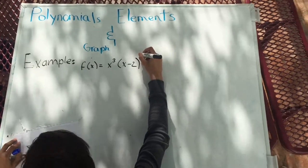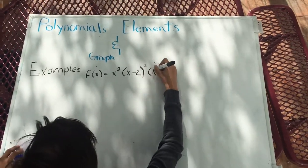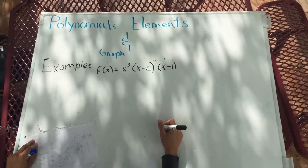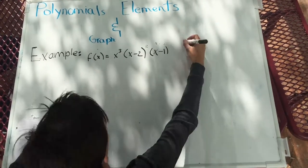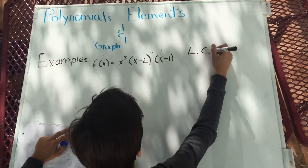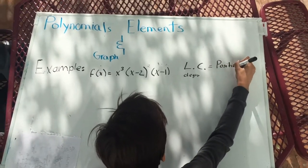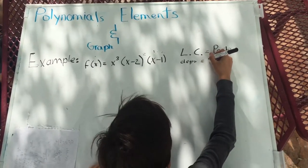In this example, we have three factors: x to the third, x minus 2 squared, and x minus 1. We have a leading coefficient that is positive and the degree is 6 and is even.